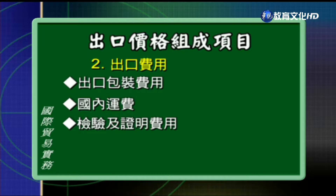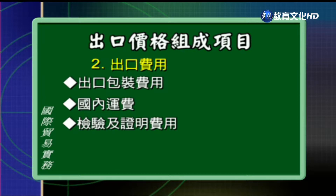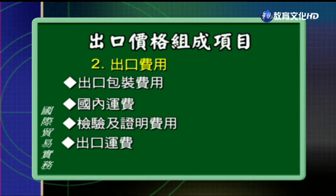第三项是检验及证明费用，像是检验、检疫或者是公证的费用，还有一些必要的证明文件的申请费用，比如说原产地证明书、领事发票这些相关的申请费用。第四个部分是出口的运费，它是指从出口地到目的地之间的国际运输费用。这笔费用要不要记录在出口价格里，主要是看出口条件来决定的。